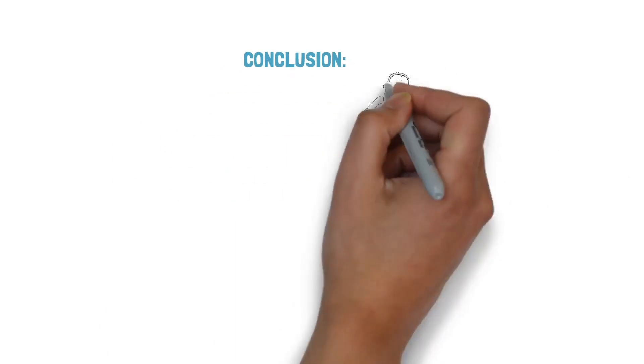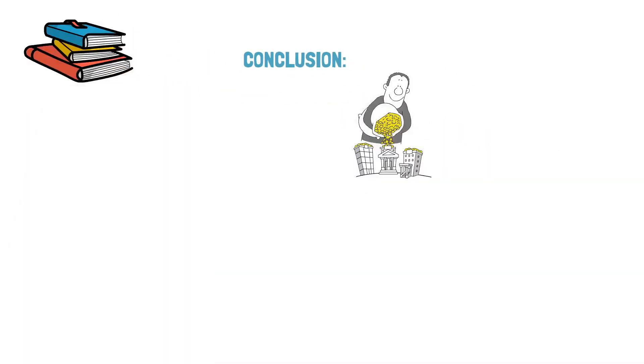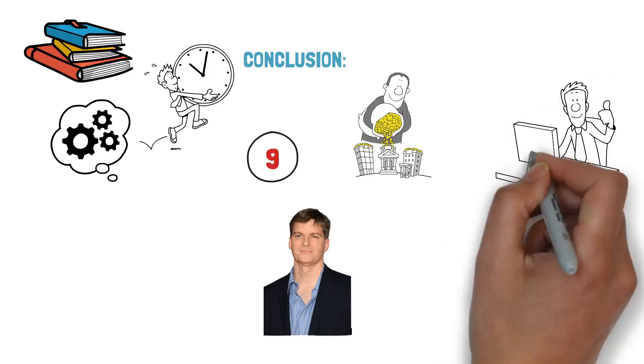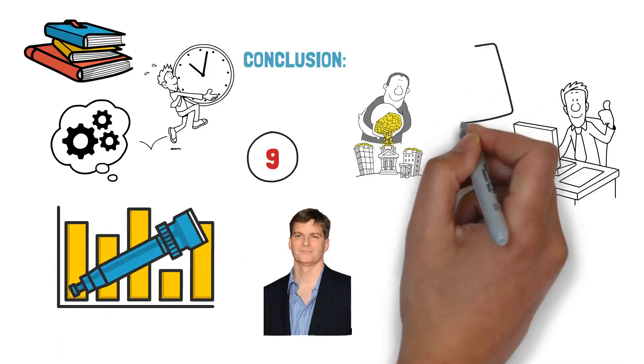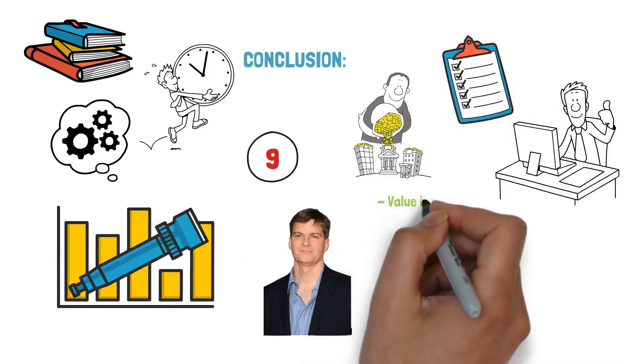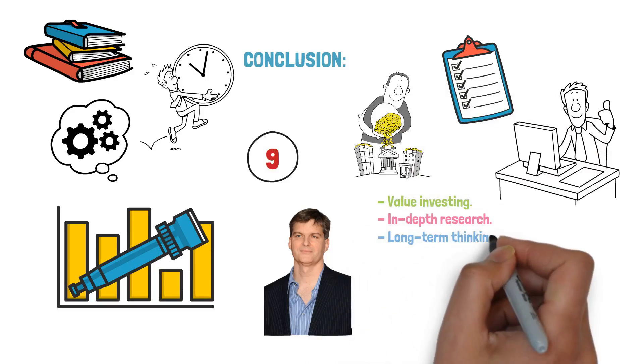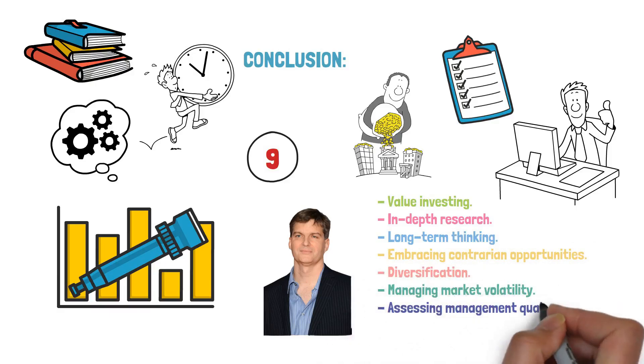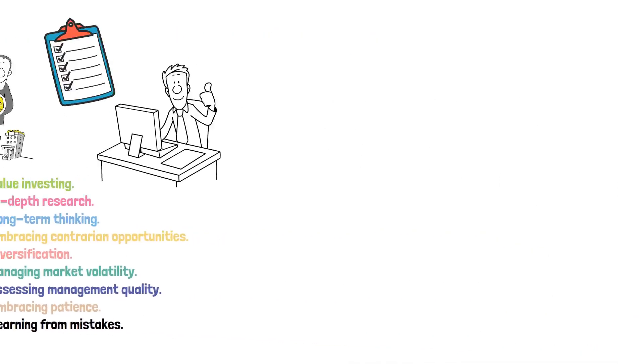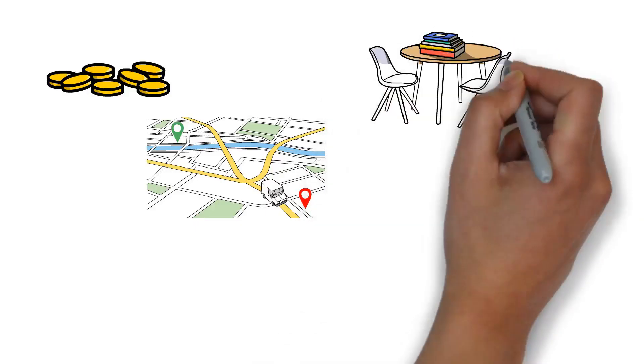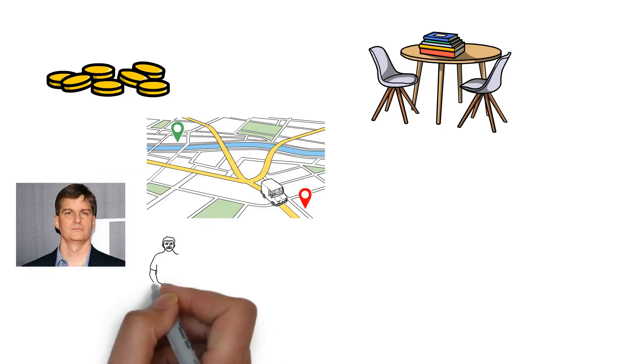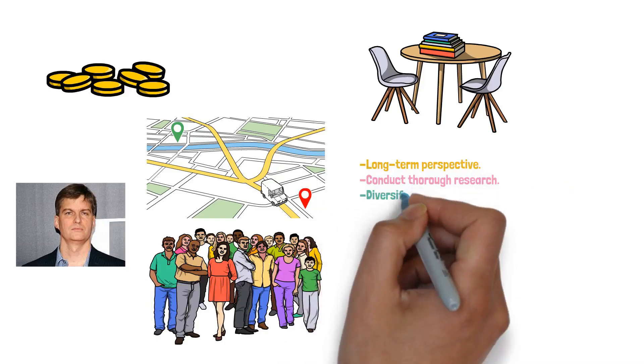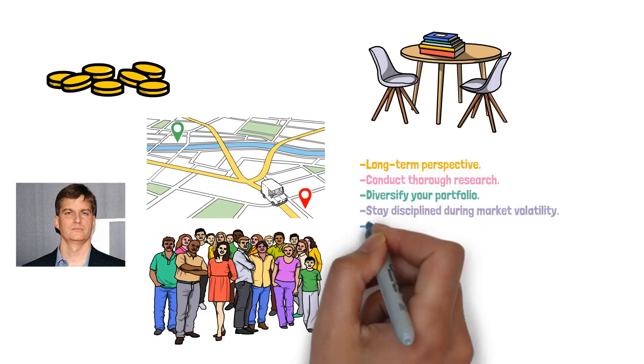In conclusion, mastering investing requires a combination of knowledge, discipline, and a strategic mindset. By incorporating the 9 Michael Burry's tips for beginner investors into your investment approach, you can enhance your chances of achieving long-term success. These tips cover various crucial aspects of investing, including value investing, in-depth research, long-term thinking, embracing contrarian opportunities, diversification, managing market volatility, assessing management quality, embracing patience, and learning from mistakes. Remember, investing is a journey that requires continuous learning and adaptation. As Michael Burry and other famous investors have emphasized, it's crucial to approach investing with a long-term perspective, conduct thorough research, diversify your portfolio, stay disciplined during market volatility, and learn from your mistakes. These principles will help you navigate the complex world of investing and increase your chance of making sound investment decisions.